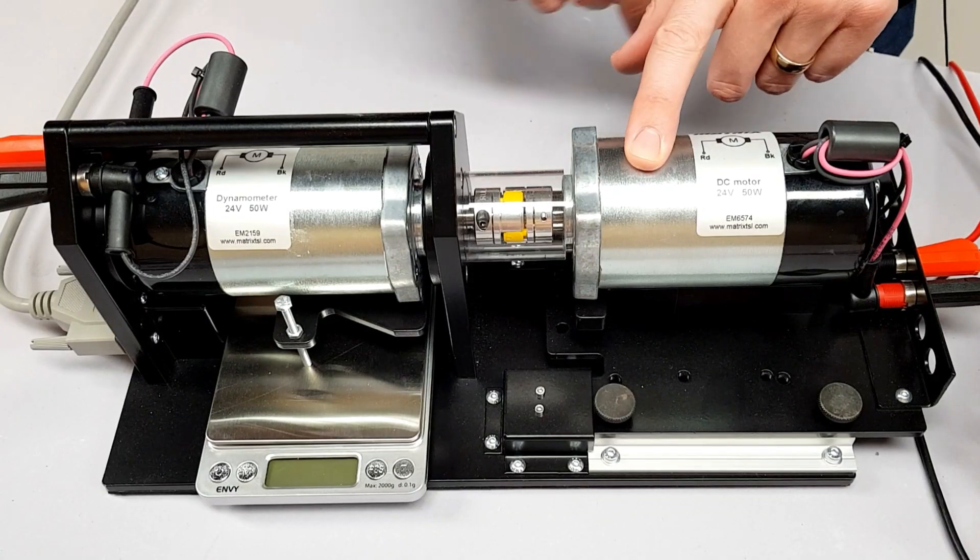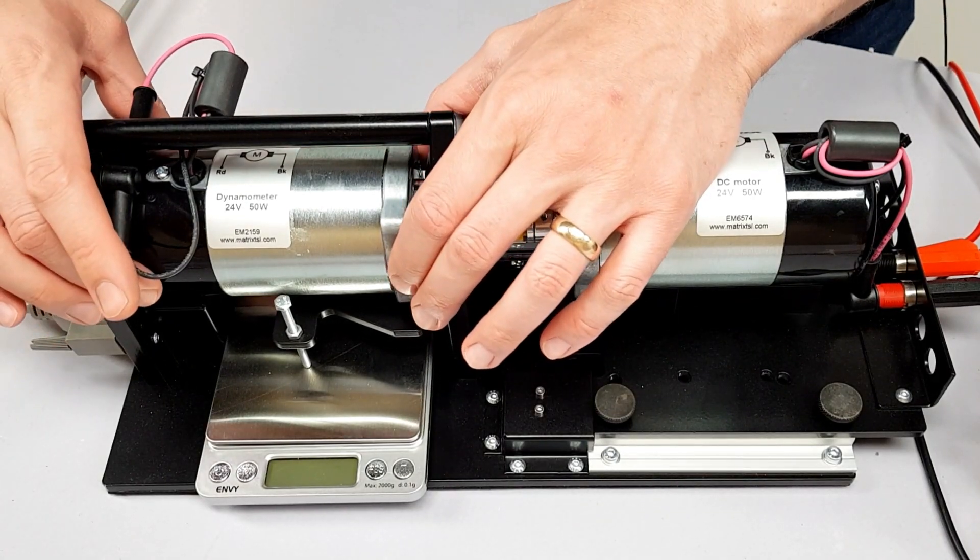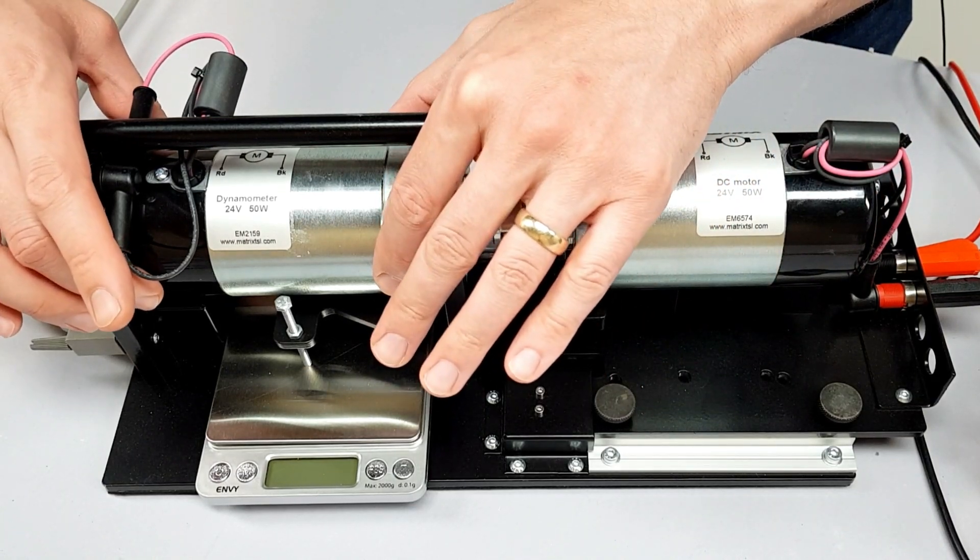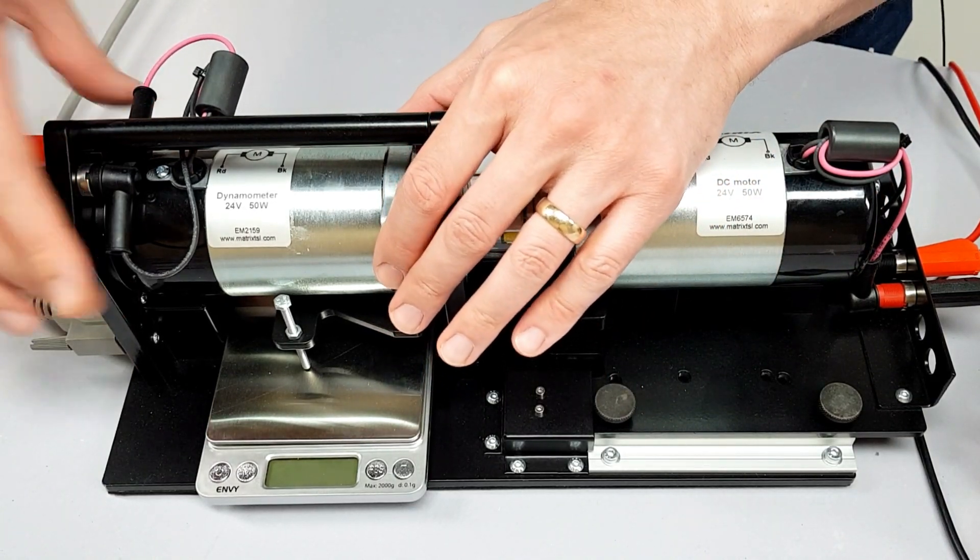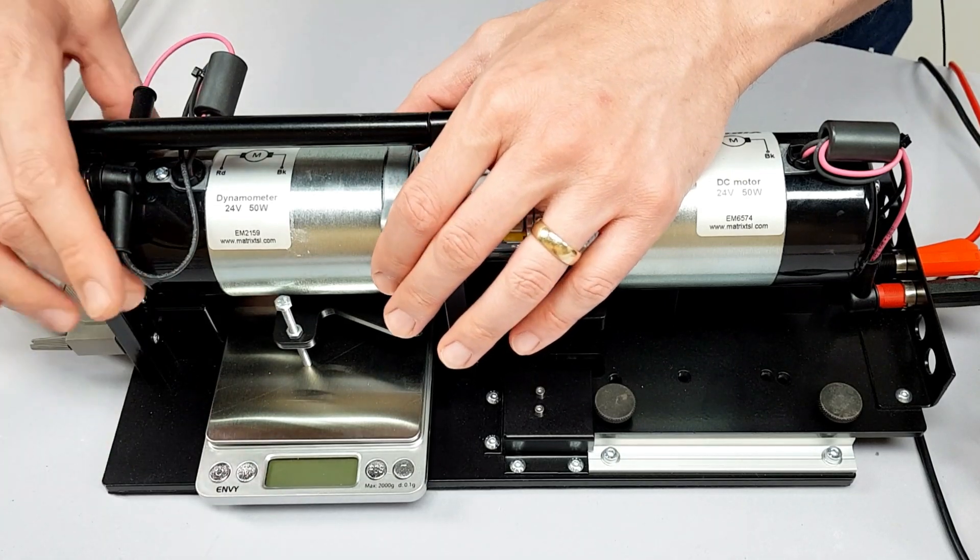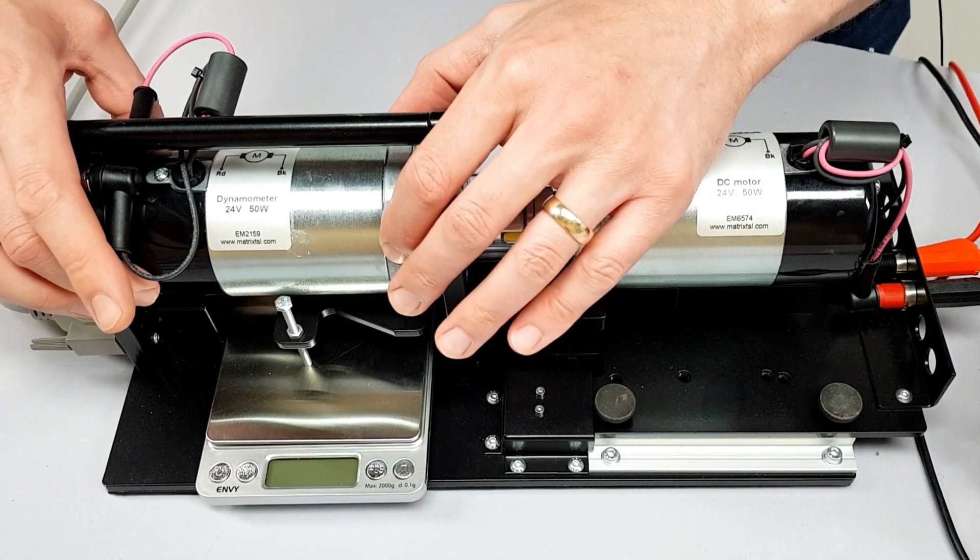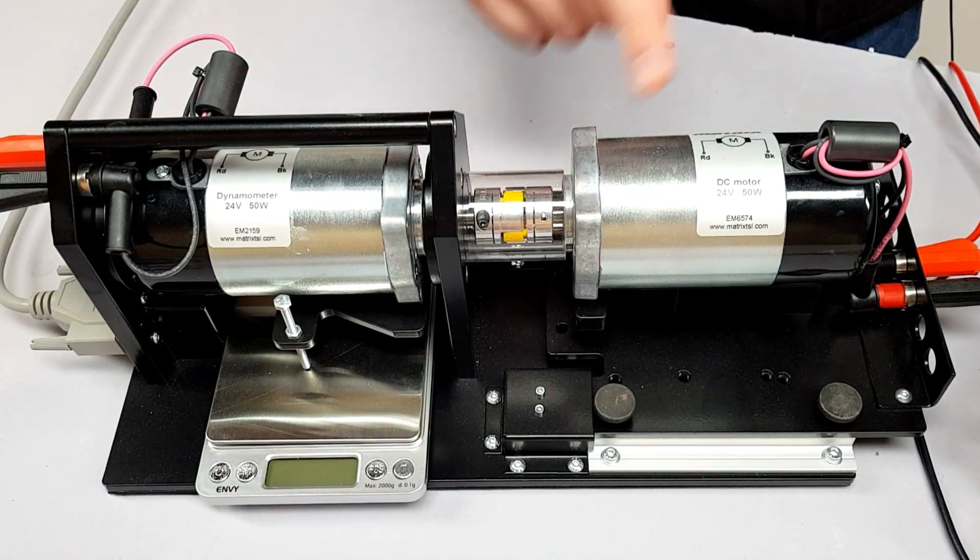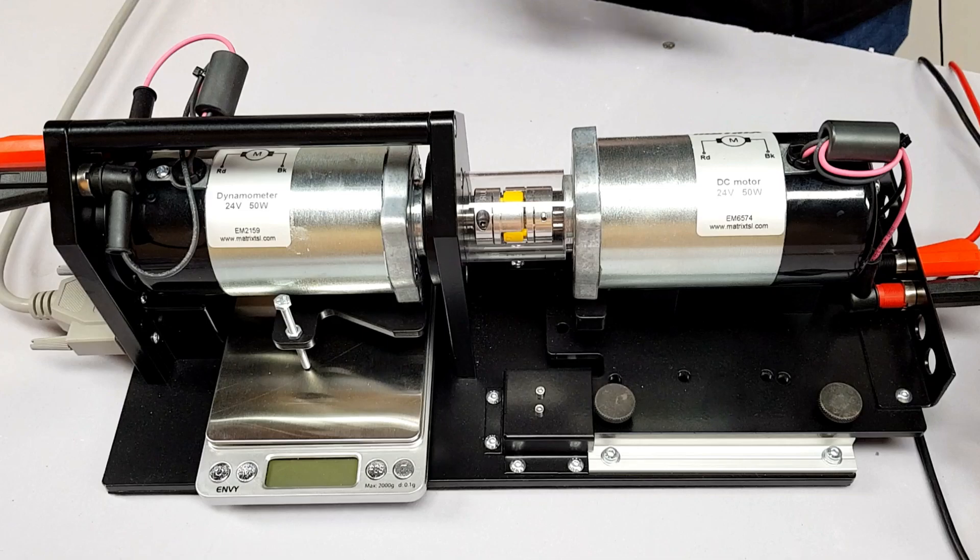We've got our DC motor connected into our dynamometer, and if you remember from a previous video, when this starts to spin, this will try and twist but obviously there's only so far it can go before it starts to press onto the scale at the front here. So when we power it up, this is going to start pressing down on there and giving us a reading. We'll power up the power control box and this will just give a little initial spin as it powers up.